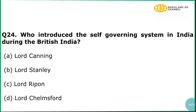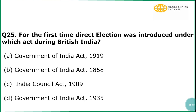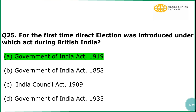Question number 24: Who introduced the self-governing system in India during British India? The correct answer is option number D, Lord Chelmsford. In explanation, the Montagu-Chelmsford reforms, more briefly known as the Montfort reforms, were introduced by the colonial government to introduce self-governing institutions gradually in British India. Question number 25: For the first time, direct election was introduced under which act during British India? The correct answer is option number A, Government of India Act 1919.